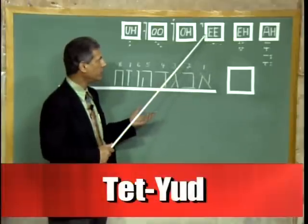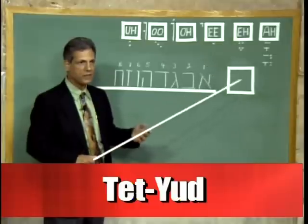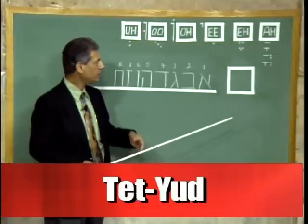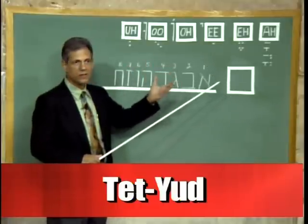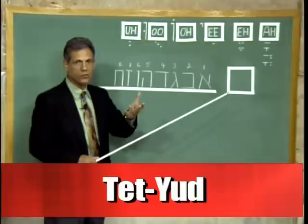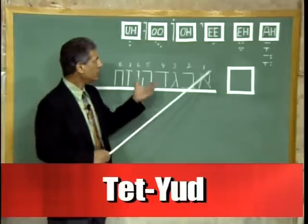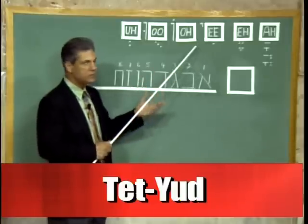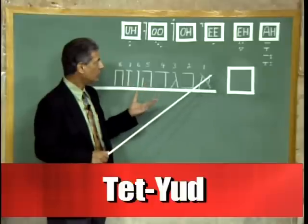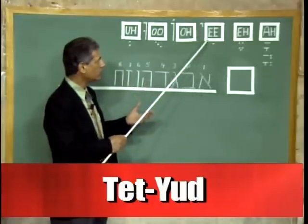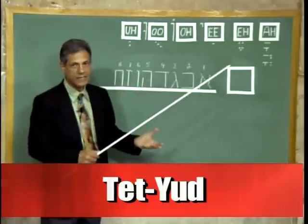Now, what is a Yud? A Yud is the smallest letter of the Hebrew alphabet, and we use it occasionally as a grammatical helper. The Yud is the tenth letter of the alphabet. So when you see a Yud next to a letter and a dot underneath, that's an E sound.